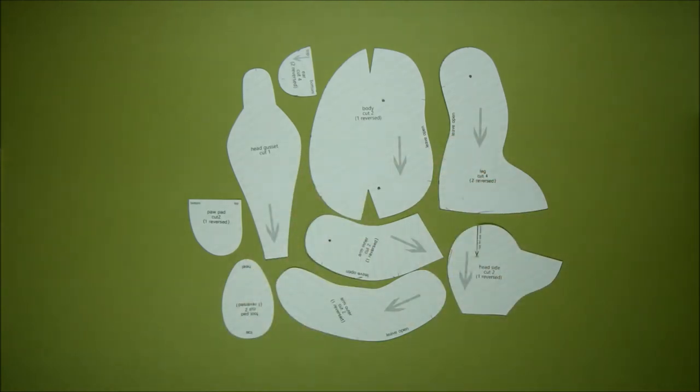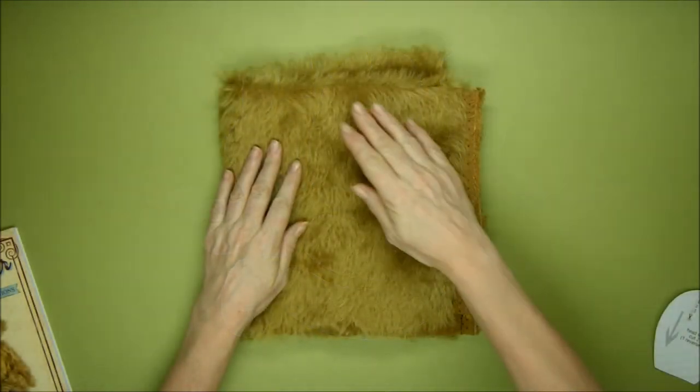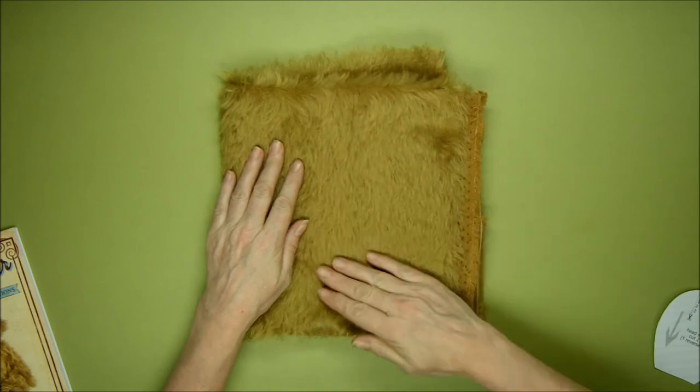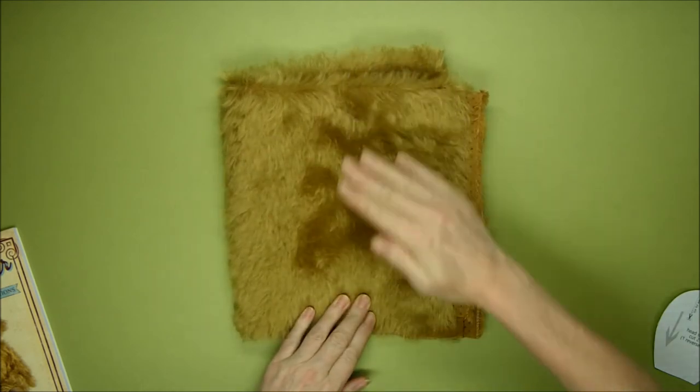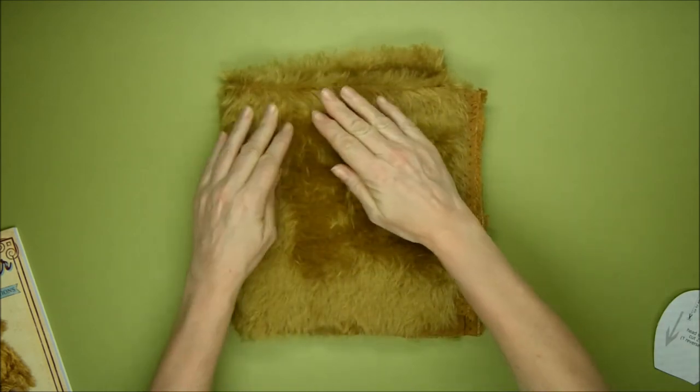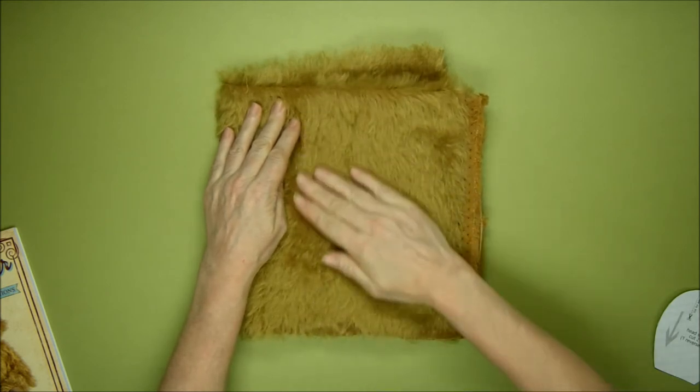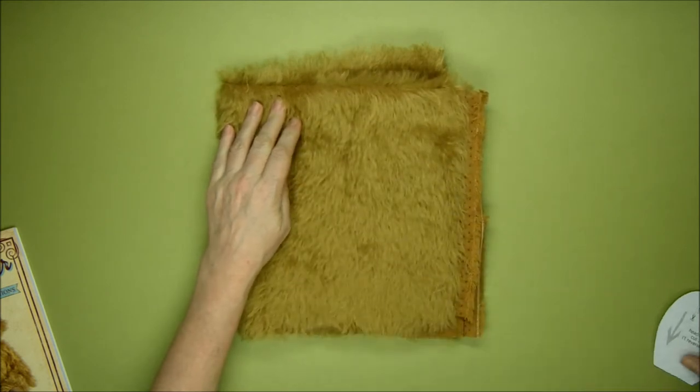You'll see the pile direction arrow - let me talk you through that. Try brushing your hand in different directions across your fabric. Just like stroking a dog, if there's a pile direction, there'll be a comfortable way for the fabric to sit.